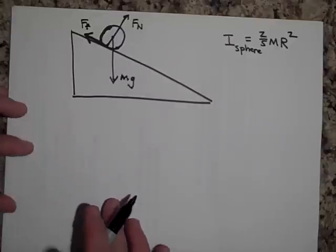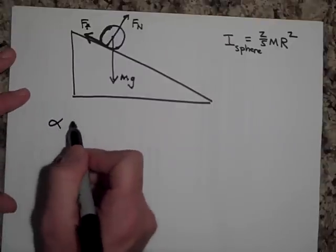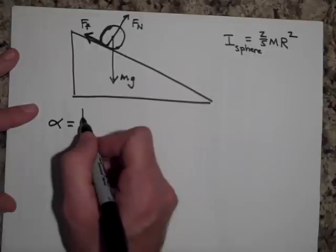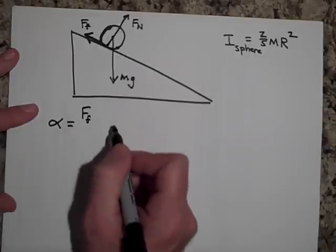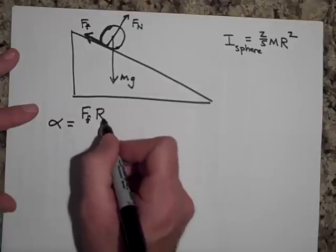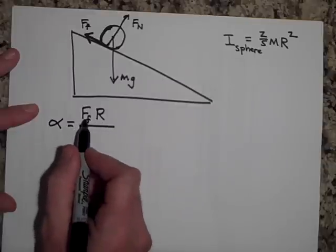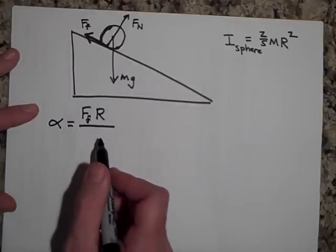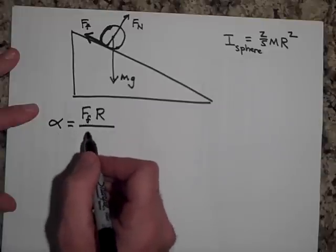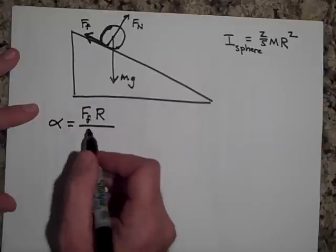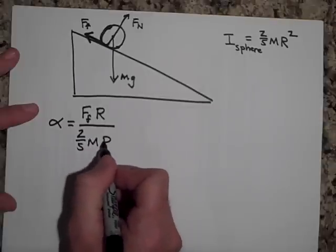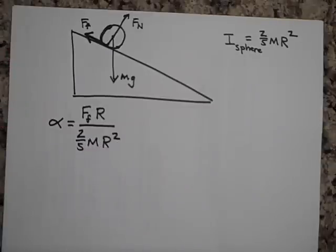So let's apply Newton's second law in rotation. Alpha equals the net torque. Now the net torque is just going to be the force of friction times the lever arm. So the lever arm in this case is the R of the ball. So alpha equals the force of friction times R. And then we got to divide, not by M. A doesn't equal F net over M here. Alpha equals net torque over I. And I is going to be two fifths MR squared.